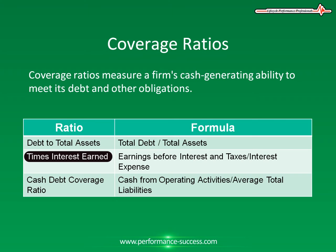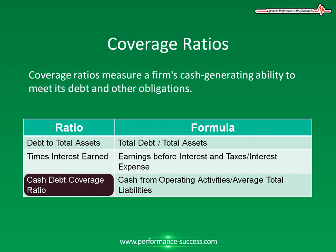The next ratio is cash debt coverage ratio, which is cash from operating activities divided by average total liabilities. Comparing cash from operating activities to total liabilities, the cash debt coverage ratio measures a company's ability to pay off all of its liabilities from cash operations. A cash debt coverage ratio of less than one would mean a negative cash flow — for example, a ratio of 0.95 would mean there is only enough net operating income to cover 95% of annual debt payments.